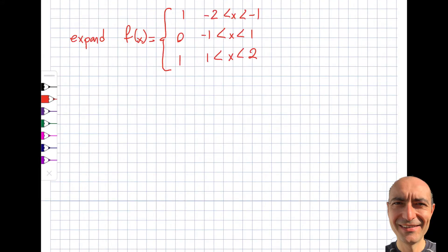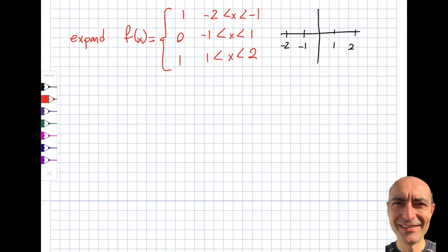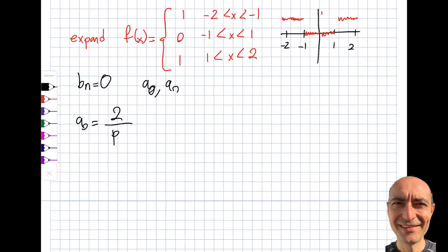Now for the next question — a piecewise function defined over the intervals [-2,-1], [-1,1], and [1,2]. Plotting it: the function equals 1 on [-2,-1] and [1,2] and 0 on [-1,1]. The function is symmetric about the y-axis, so it is even. That means b_n = 0, and I only need to compute a_0 and a_n.